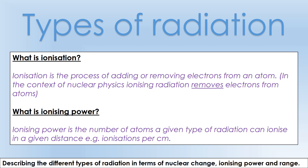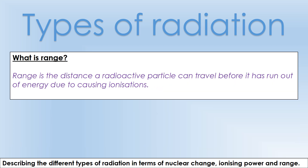Ionizing power is the number of atoms a certain type of radiation can ionize in a given distance - for example, the number of ionizations per centimeter for alpha radiation. Range is the distance a radioactive particle can travel before it runs out of energy, because each time it ionizes something it loses some energy until it can't cause any more ionizations.